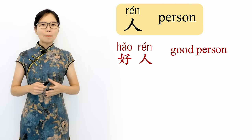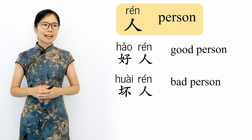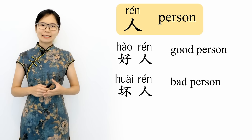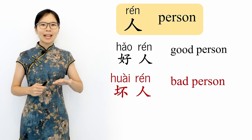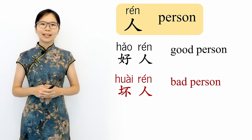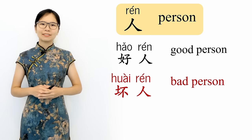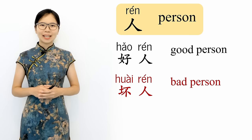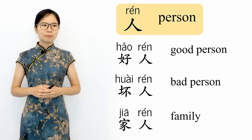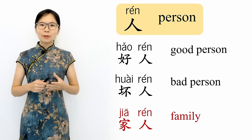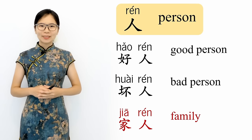The opposite of 好人 is 坏人, which means bad person. 坏人, bad person. And finally, we have 家人. 家 means home, so 家人 means the people in your home — in other words, your family.